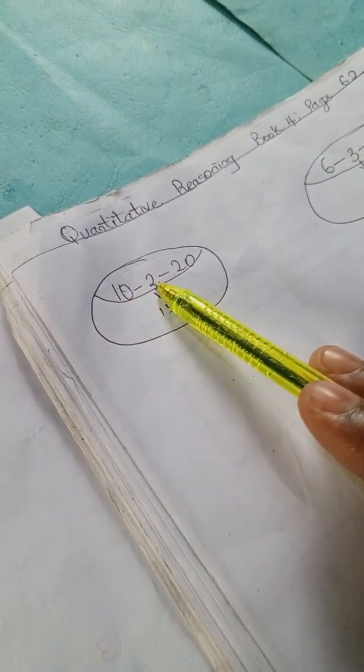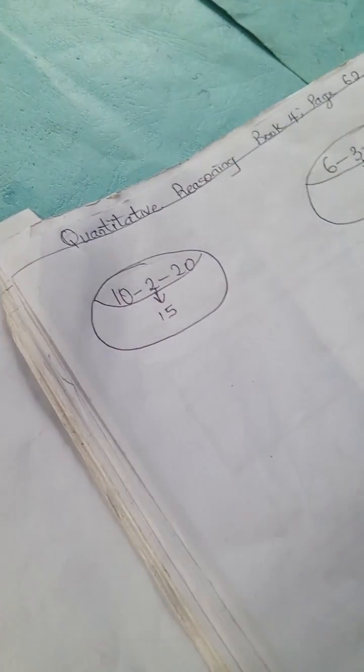So we have this problem. We have 10, 2, 20, 15, and here we have 6, 3, 18, and 8.